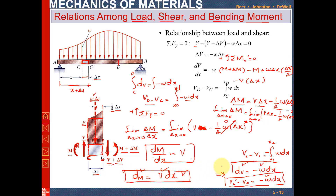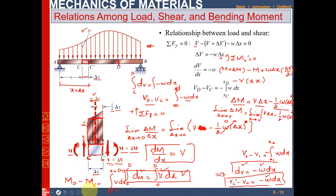This relationship dM equals V·dx can be used directly in problems, but with one limitation: you cannot apply it to a concentrated or point load — it is only valid for distributed loads. To find the moment at point D, integrate from C to D: MD minus MC equals the integral of V·dx from xC to xD. Using this equation you can find the bending moment at any point.